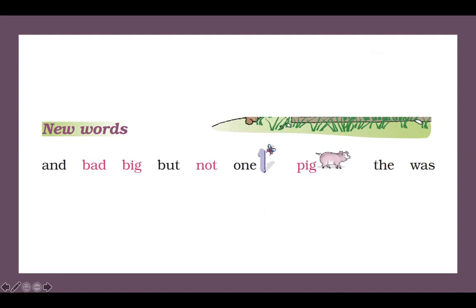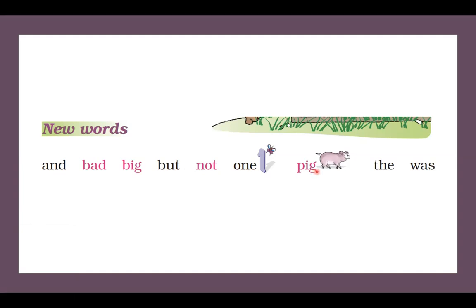Chal yeh, ek baar phir se saare shabd padhte hain, baethe. Aap bhi meri saad saad — thoda practice karna, apna page number nine nikaal lo. First word: and — a-n-d, and. Bad — b-a-d, bad. Big — b-i-g, big. But — b-u-t, but. Not — n-o-t, not. Next word is one — o-n-e, one. Next word pig — p-i-g. The — t-h-e, the. Was — w-a-s, was.